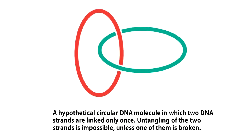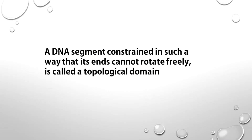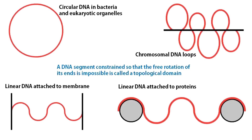Let me show you a hypothetical circular DNA molecule. You cannot separate the two strands without breaking any one of them. A DNA segment constrained in such a way that its ends cannot rotate freely is called a topological domain. A few examples of topological domains are shown here. Circular DNA is one example, typical of bacteria, mitochondria, chloroplasts, and many viruses. In this case, there are no DNA ends at all, since both DNA strands are covalently closed.